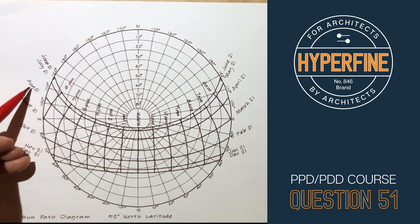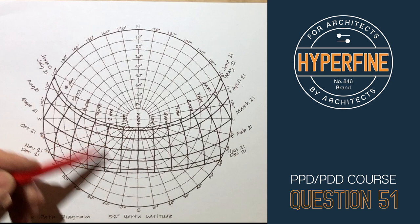So we find August, we'll follow that around, and then the lines going vertically, the dark lines going vertically are the times.